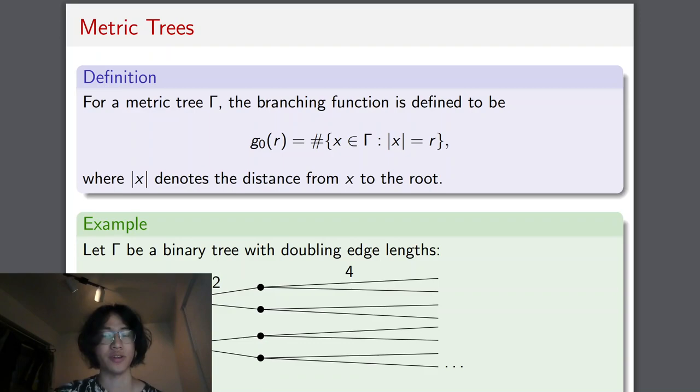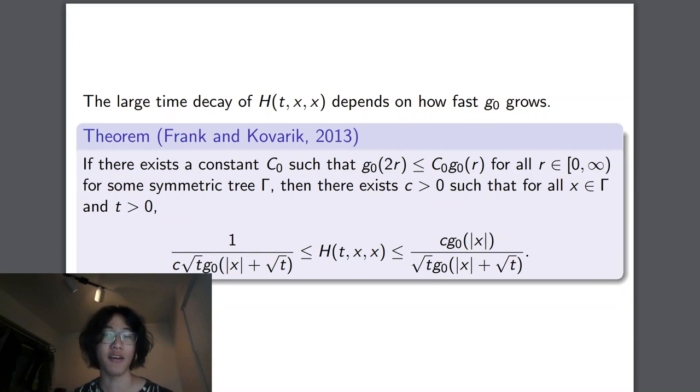Now on to metric trees. So for metric trees, I defined the branching function, which is simply the number of edges if you take a vertical slice at exactly distance r from the roots. So here's a simple example where gamma is a binary tree with doubling edge lengths. And in this case, the branching function is just the minimum of 2 to the n, such that r is smaller than 2 to the n.